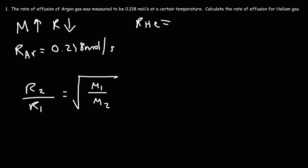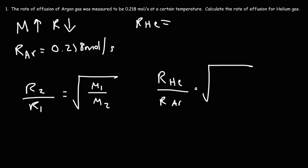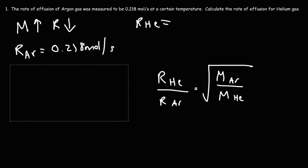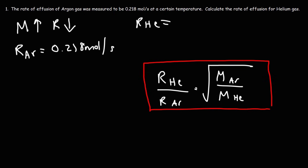Notice the inverse relationship — the subscript 2 is on top on the left, but it's on the bottom on the right. That's important when plugging in your numbers. Let's say R2 corresponds to helium and R1 corresponds to argon. Molar mass 1 corresponds to argon, and molar mass 2 corresponds to helium. This is the equation associated with Graham's Law of Effusion.